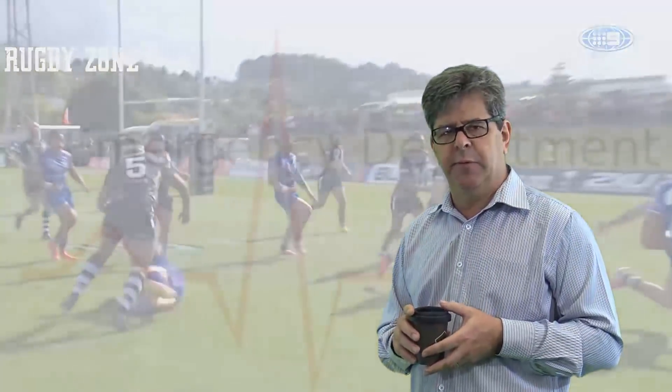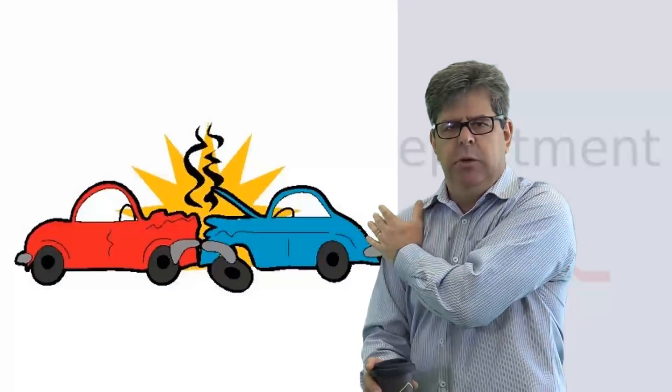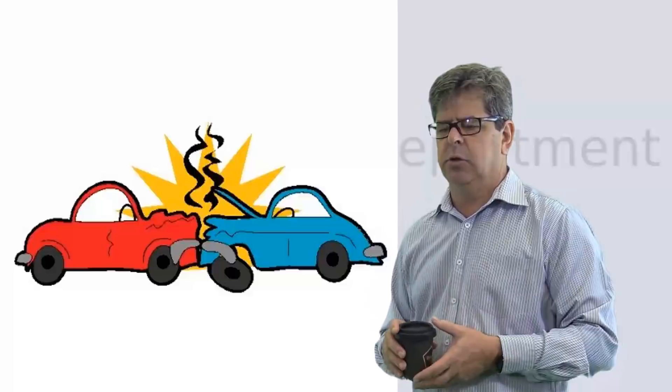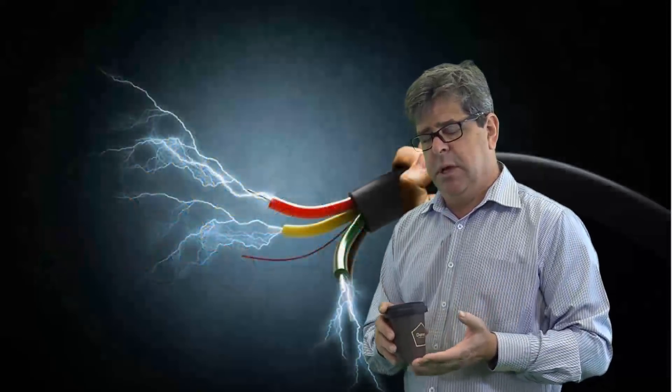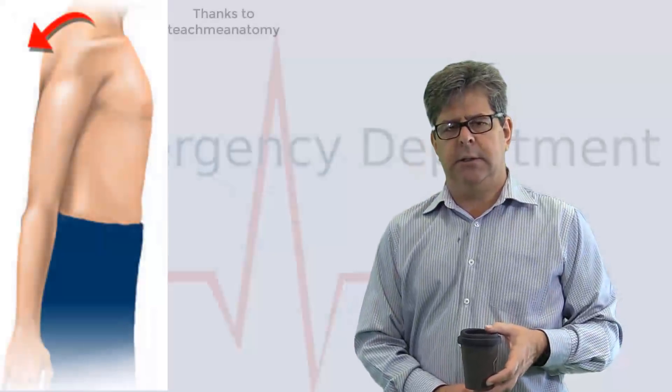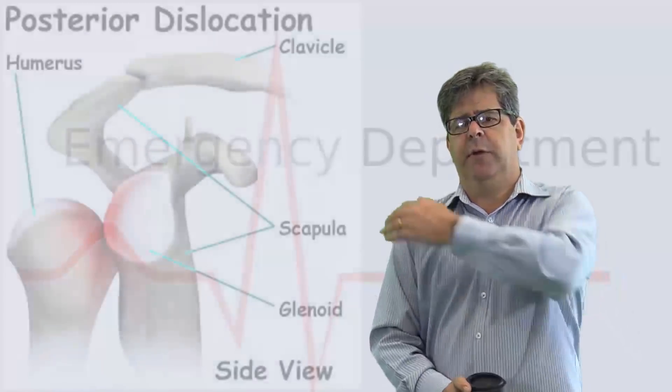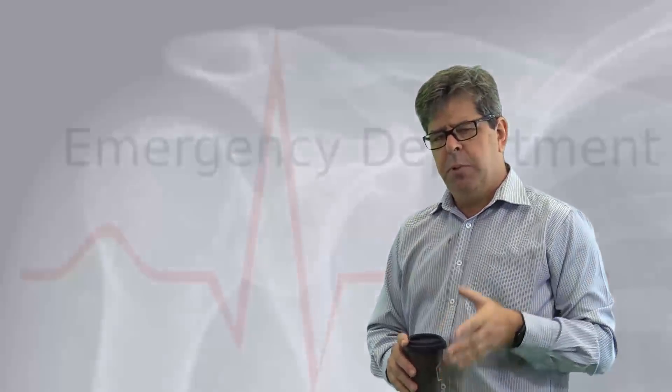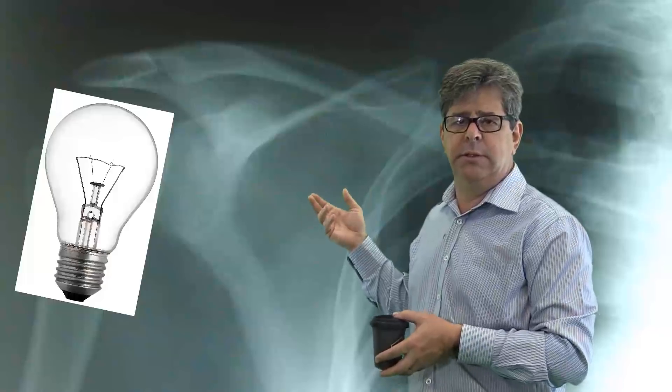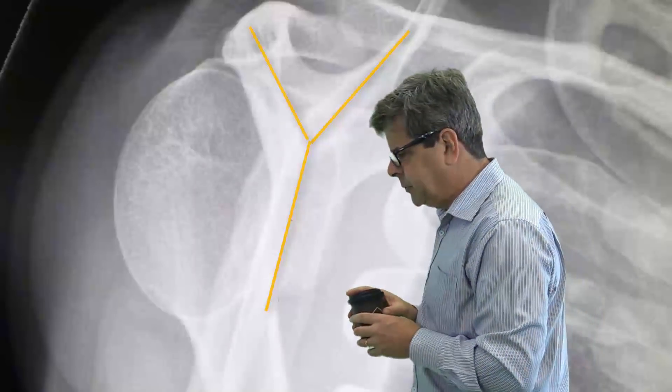To get a posterior dislocation, you need a fair bit of force. You can get it from just being smashed anteriorly in a motor vehicle accident. But more commonly, you get forced internal rotation that occurs when you've got seizures, electrical injury, and it forces it posteriorly. The reason that it's probably missed - well, first of all, I don't think people are actually examining very well, because the patient's arm will be internally rotated and adducted. They can't move it very much at all, it hurts like buggery. And you can often feel posteriorly that humeral head. But if you just look at the x-ray, the x-ray can be missed. It's internally rotated, which is why it looks a little bit like a light bulb. So this is considered the light bulb sign. If you did a trans scapular view, you'll see that the head of the humerus will be behind, posterior to that Y or Mercedes sign that we spoke about before with the anterior dislocations.